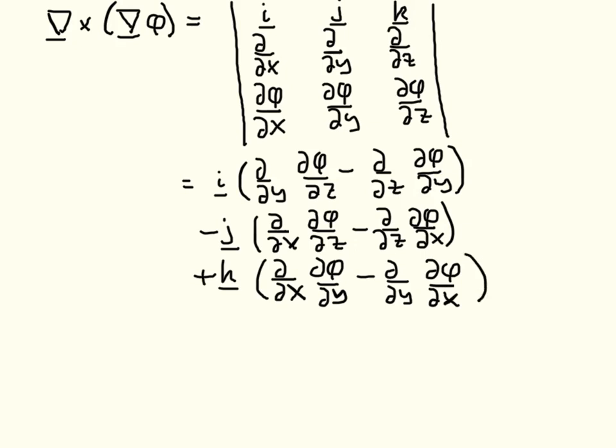What we see is that we have got a vector, these are the three components, and now what we want to do is see what these components are. What we notice is that here we have a second derivative of phi with respect to first z and then y,